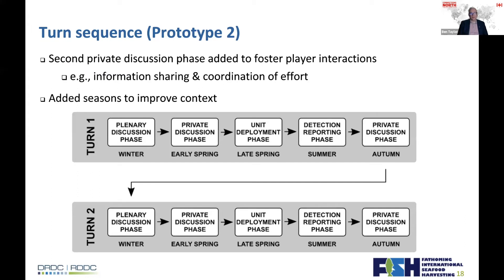In Prototype 2, we added a little more granularity — an extra private discussion phase in early spring and seasonal labels to provide touch points for players. Essentially: in winter the countries have their discussions, in spring they plan what they're going to do, in summer they do it, and in autumn information comes back with further private discussions to work out what to do with what they've learned.